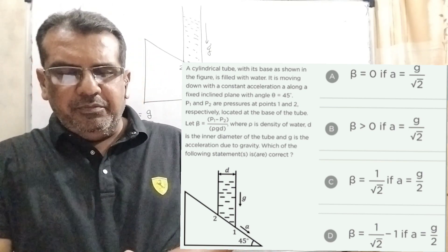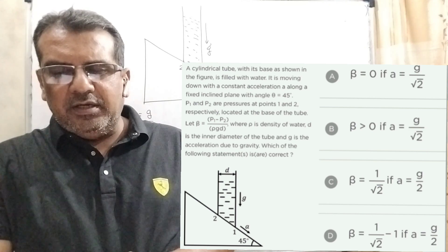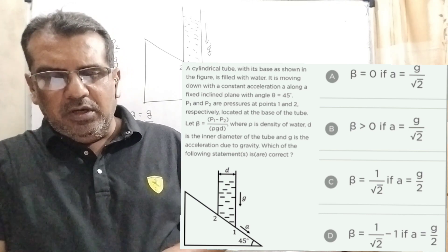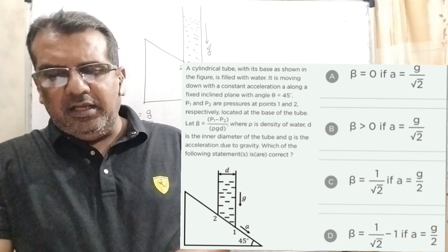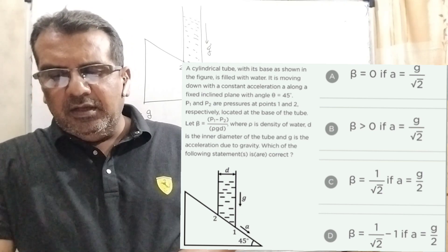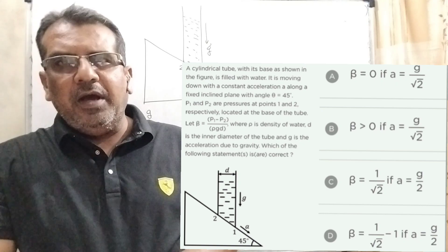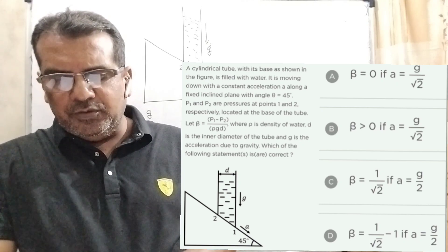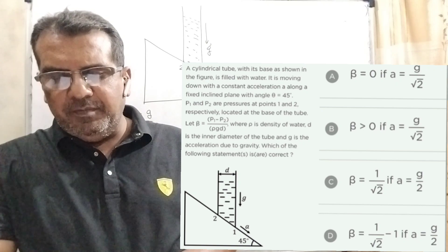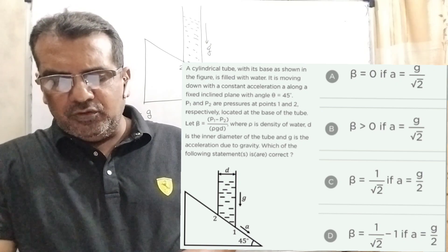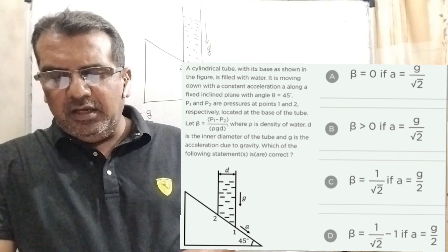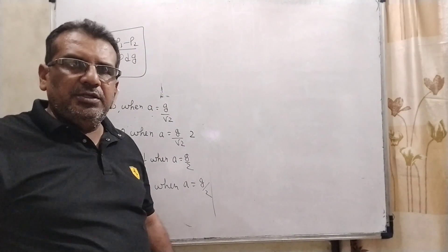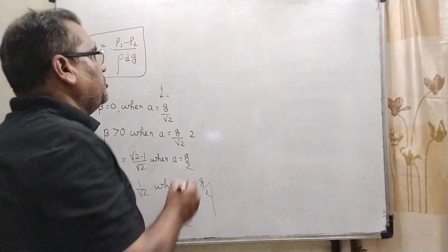This is a multiple-choice question. Option A: beta is equal to 0 when acceleration a is equal to g by root 2. Option C: beta equal to root 2 minus 1 upon root 2 when a equal to g by 2. Option D: beta is equal to 1 by root 2 when a equal to g by 2. This question is from JEE Advanced 2021.